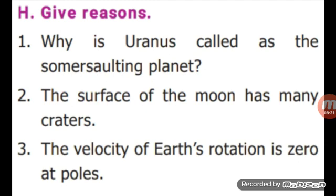Why is Uranus called as the somersaulting planet? The answer: the axis of Uranus is tilted at an angle of 98 degrees and it appears to orbit the sun on its sides like a rolling ball. So, Uranus is called a somersaulting planet. Next question: the surface of the moon has many craters. Give reason. Answer: the surface of the moon is characterized by craters created by the impact of meteors. Next question: the velocity of the Earth's rotation is zero at poles. Answer: the axis of the Earth runs from the north pole to the south pole and the pole is a single point. So, the velocity of the Earth's rotation is zero at poles.